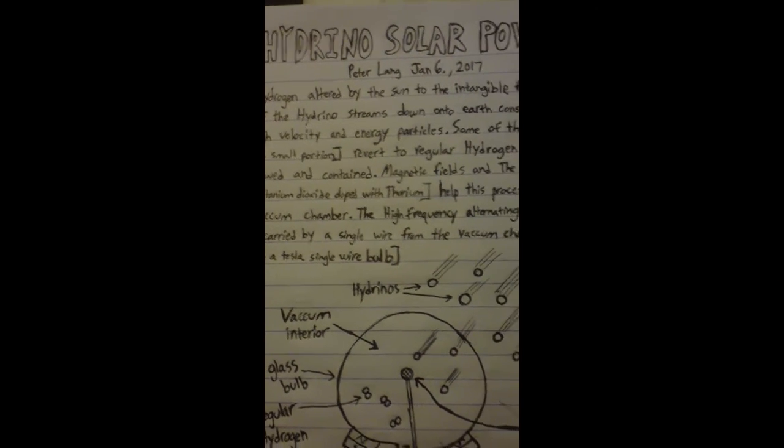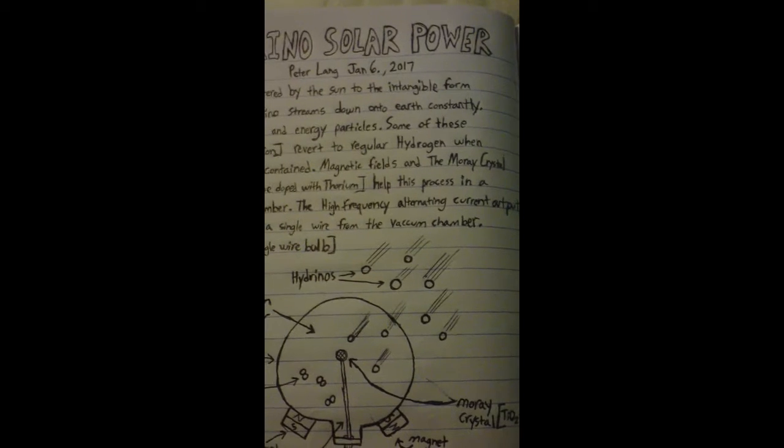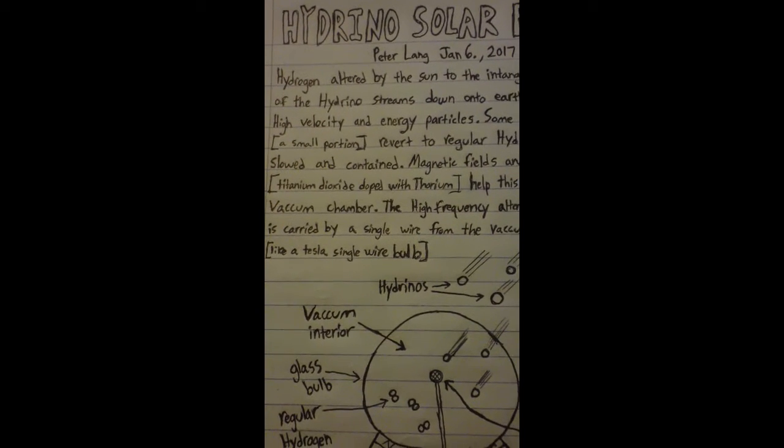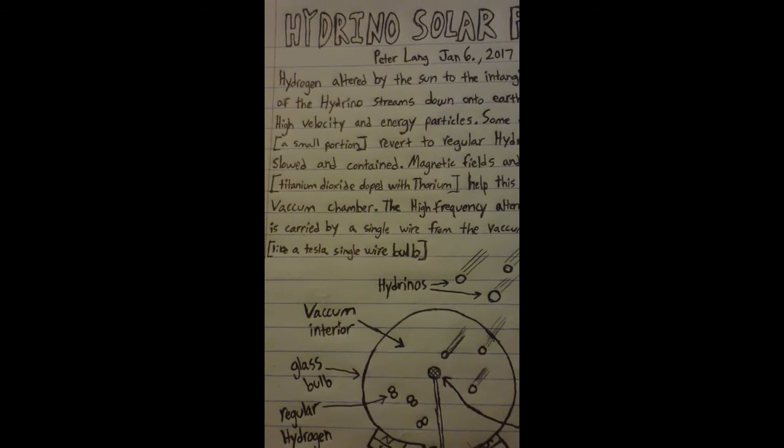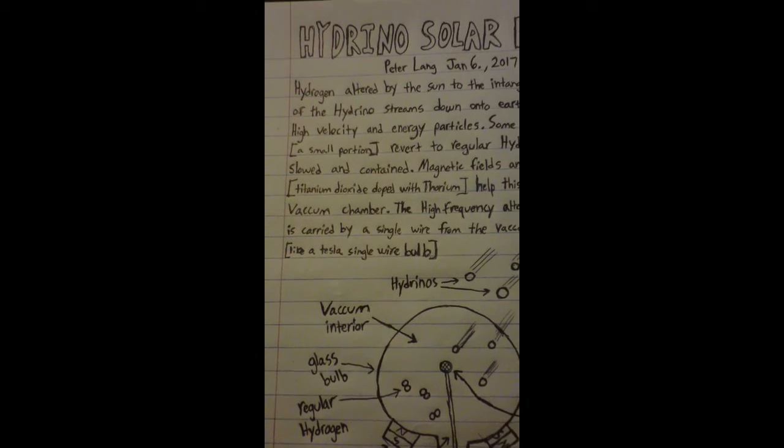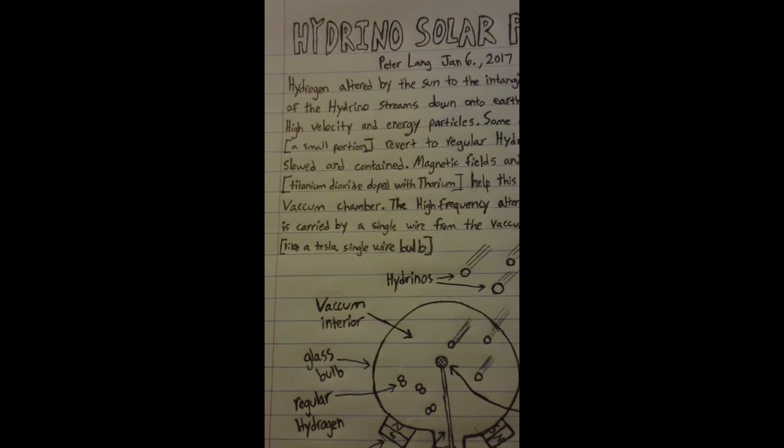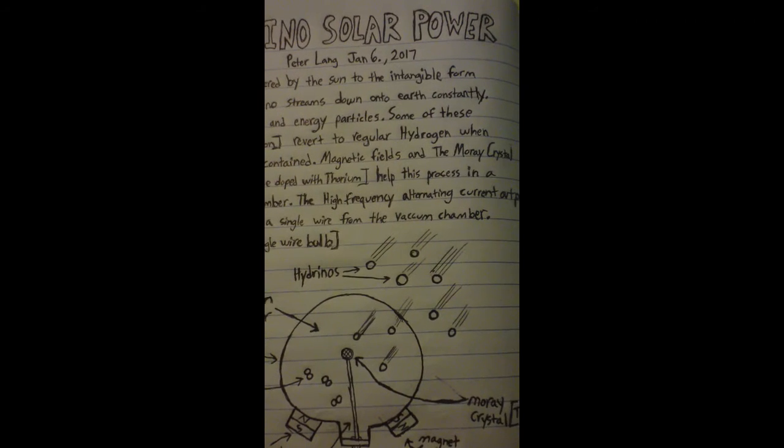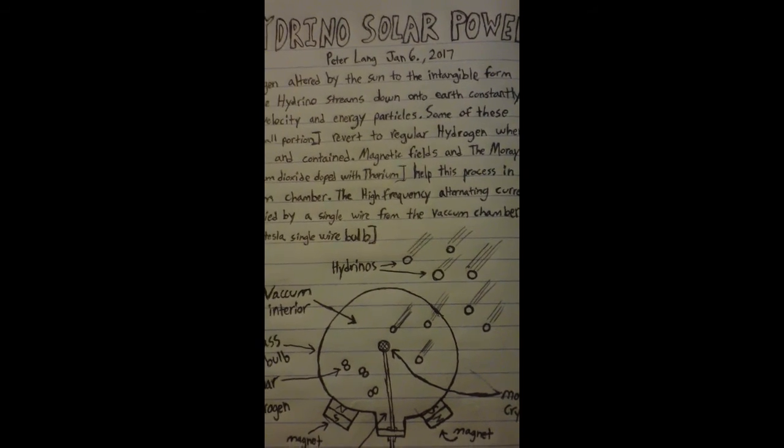This aspect of the hydrinos concerns hydrino solar power. While Mills' system converts hydrogen into dark matter and takes energy, this takes the hydrinos or dark matter that the sun emits and turns that dark matter into energy.